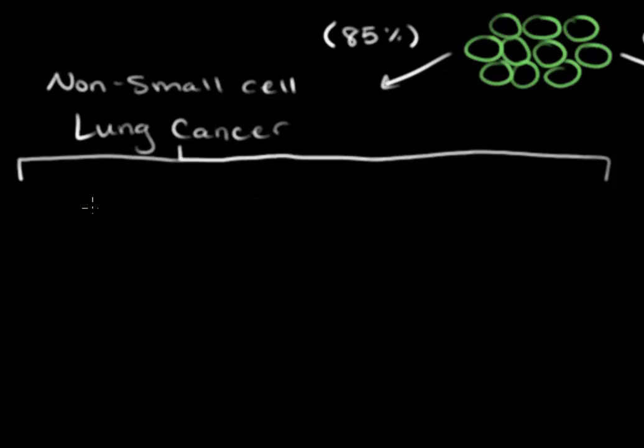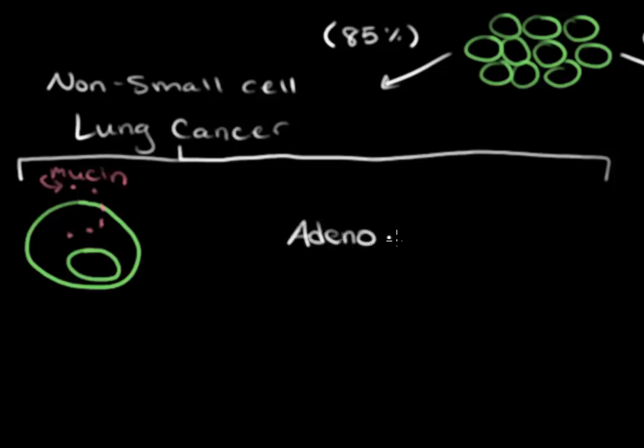So here, I'm going to draw a big cell, lots of distance from the nucleus to the cell wall. And this mature cell has the function of secreting mucin. Mucin is responsible for keeping the lungs moist. If this cell becomes cancerous, it's called an adenocarcinoma, adeno meaning coming from a gland, and glands produce mucin.